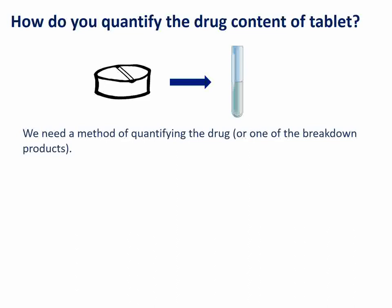That solvent might be an organic solvent such as ethanol or it could just be water — essentially we are selecting a solvent in which the drug in the tablet is going to dissolve. Once we have the drug in solution — and of course there might be other things in that tablet as well — we need to quantify that drug somehow, or one of the breakdown products of that drug. If you are looking at quantifying the drug, you will be expecting the amount or concentration present to be declining. If you are looking at one of the breakdown products, you would expect the concentration of that to be rising.